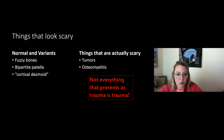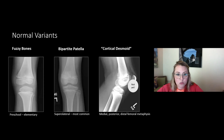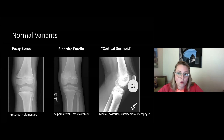We'll quickly run through some normal variants, remembering that not everything that presents as trauma is trauma — trauma can unmask underlying lesions. The distal femoral epiphysis is particularly prone to looking very irregular, which you'll see in preschool to mid-to-late elementary age kids. By adolescence and high velocity sports, that irregularity has typically resolved.